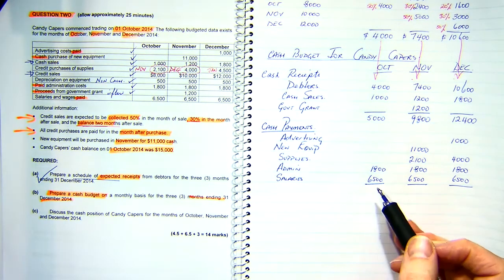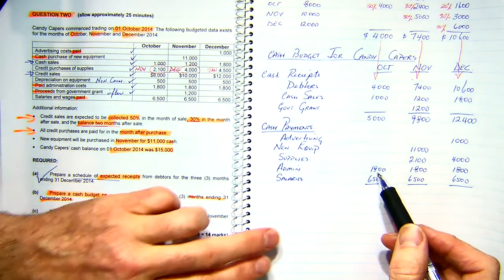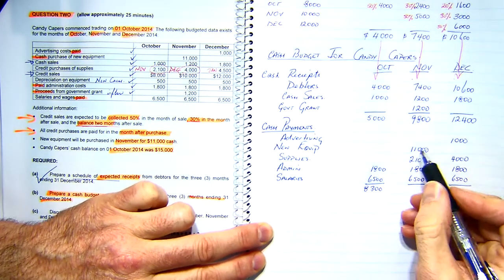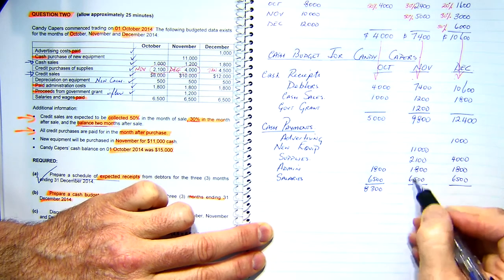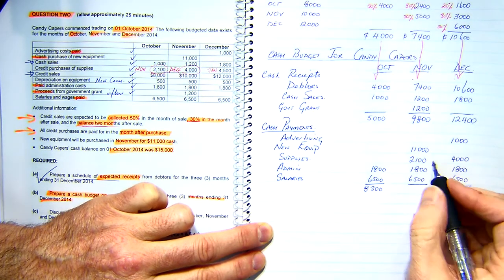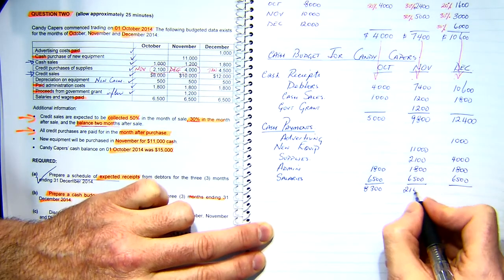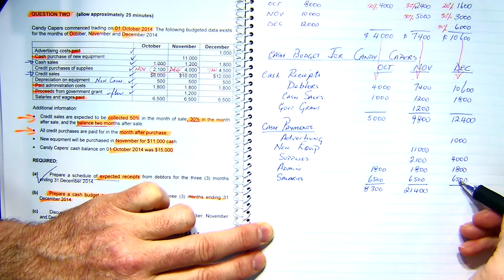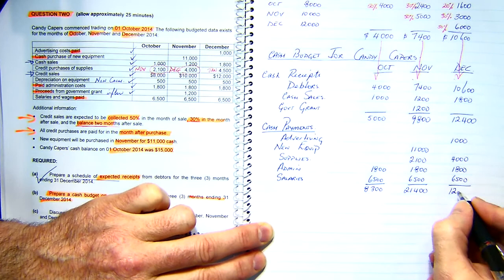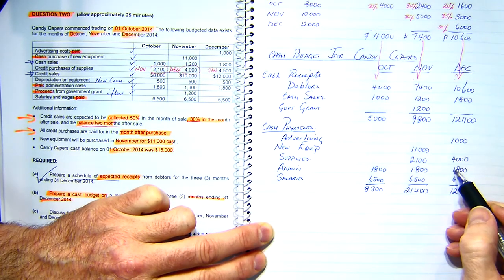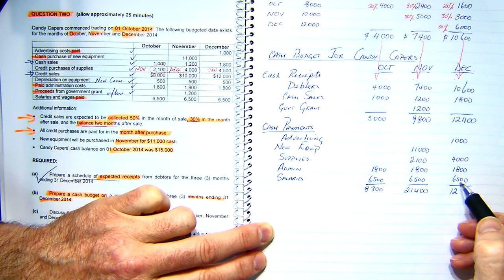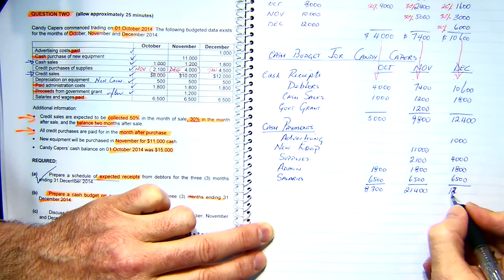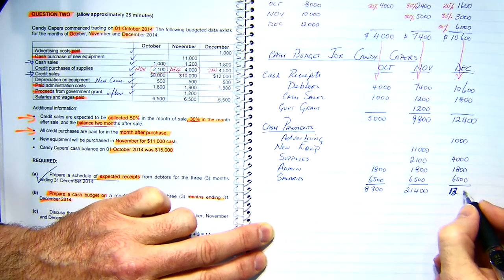Now we just need to total these up. My total cash payments come to $8,300 in October, $21,400 in November, and $13,300 in December.